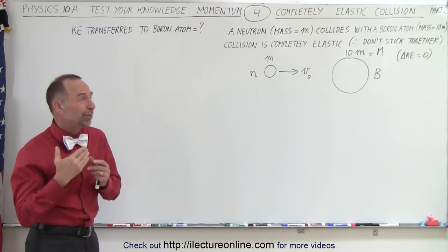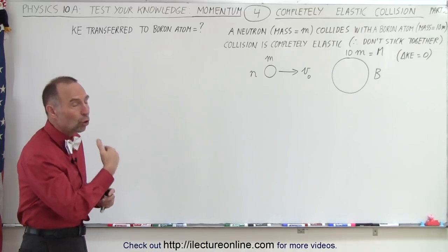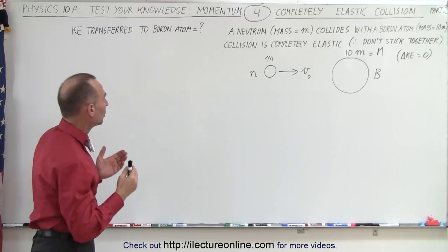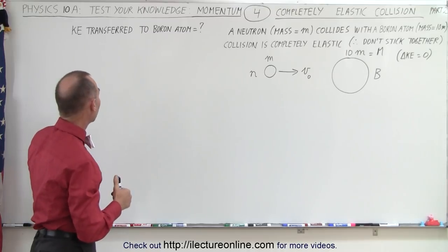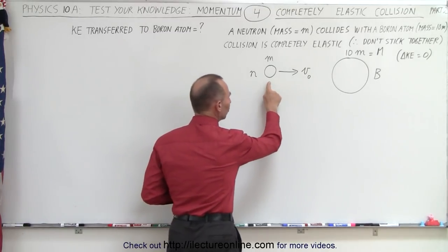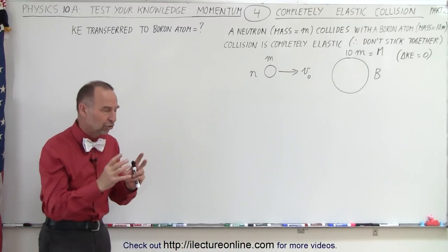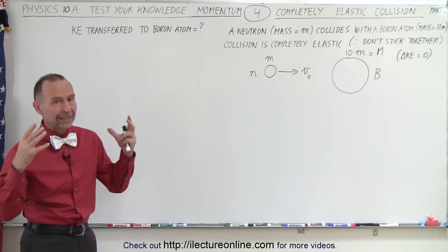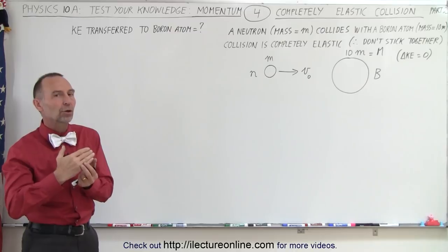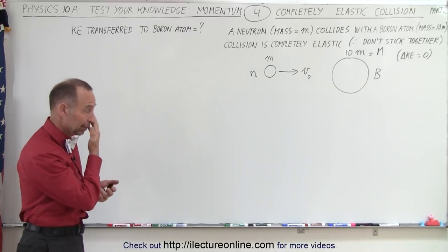If the collision is completely elastic, that means they don't stick together, and there's no loss in kinetic energy by definition. What we need to do is figure out how much of the kinetic energy that the neutron had initially is now transferred to the boron. The sum of the kinetic energies of the two after collision will equal the kinetic energy of the neutron before the collision, but we want to know what fraction of it was transferred to the boron atom.